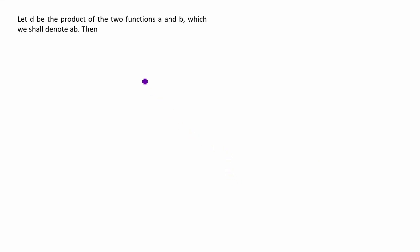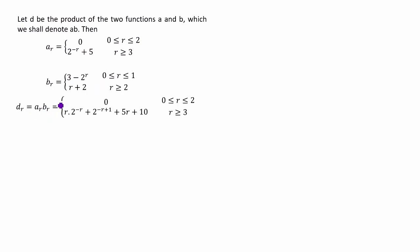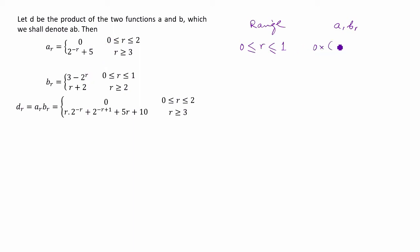Similarly, let d be the product of two functions a and b, which we shall denote a times b. We take the same numeric functions a and b and find their product. The common range is similarly r from zero to one. For this range, we find a(r) into b(r), which is zero into three minus two to the power r, equal to zero.